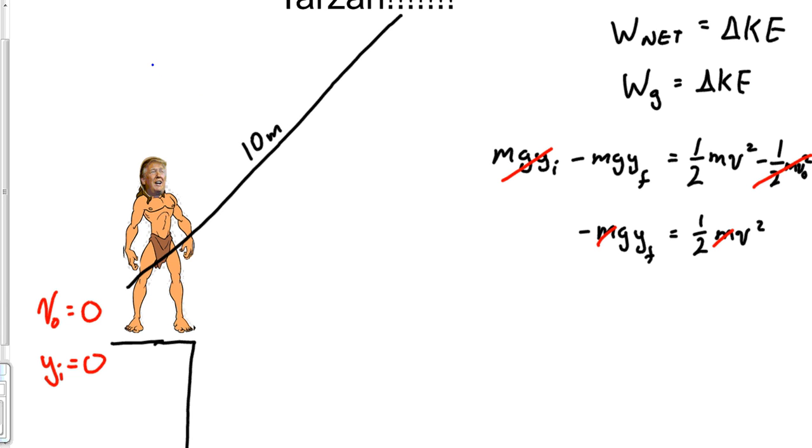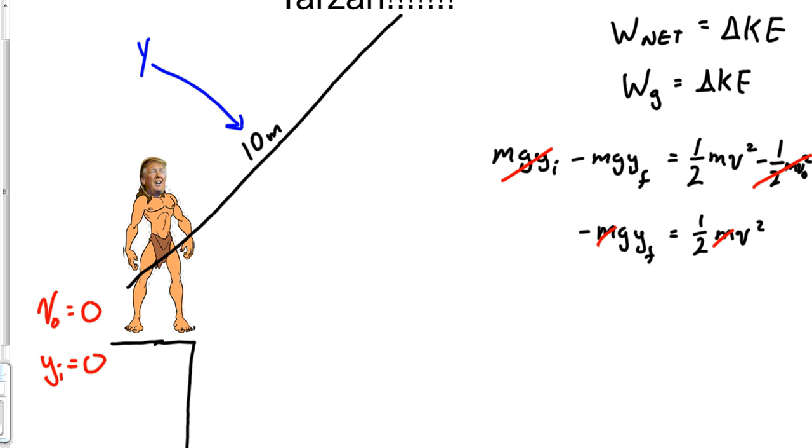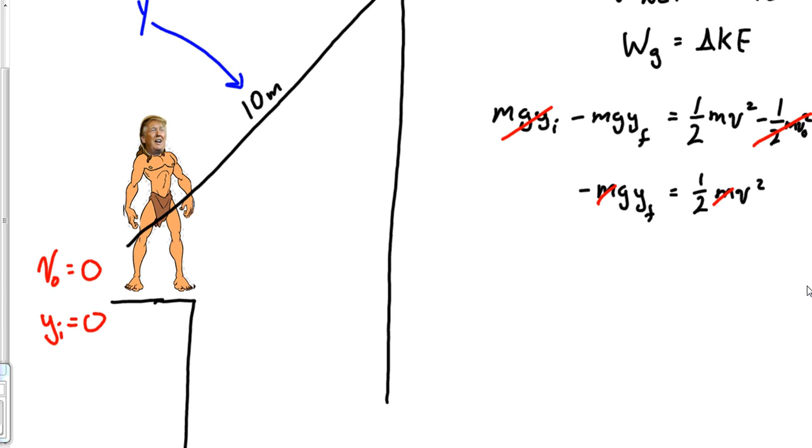Where everybody messes up: everybody wants to use that 10 as y. No, it is not y. Y is not 10. All we want to know is how far did Tarzan fall in this problem. You see the vine is 10 meters long, so even when he swings on the vine he doesn't fall. What we're looking for is how far did Tarzan fall - or Batman or Trump or whatever the problem is about, the child on the swing.